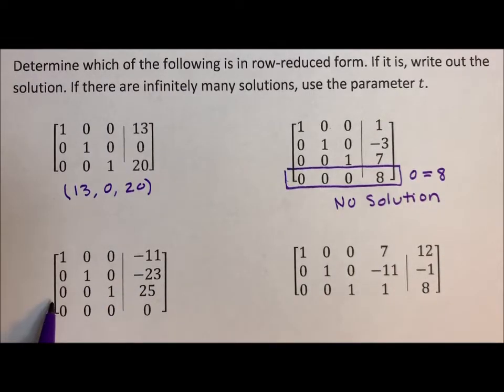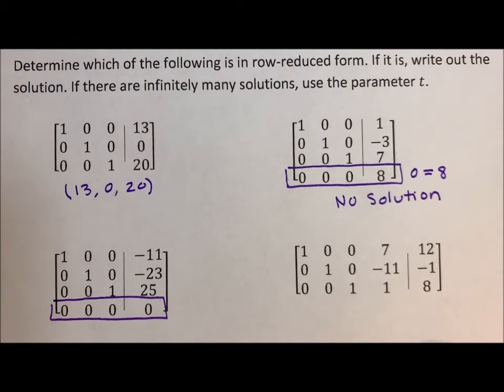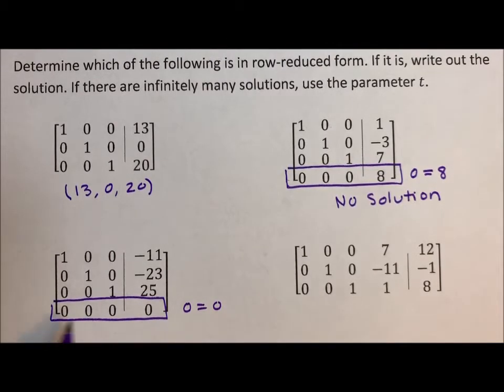Versus here, same kind of basic setup as we had here, but here we have 0 equaling 0. That's fine. We can just ignore that row. This does not mean infinite solutions. This just means we had more equations than we needed. Here we have X is negative 11, Y is negative 23, Z is 25.